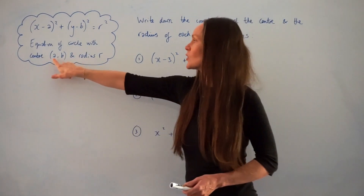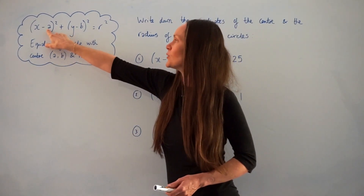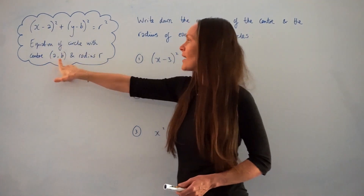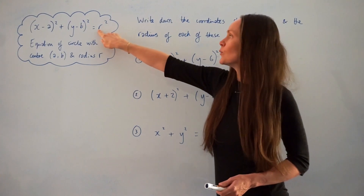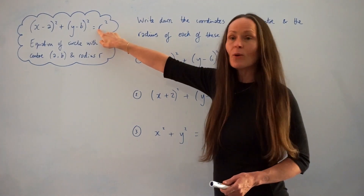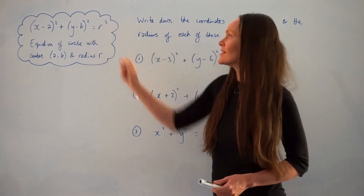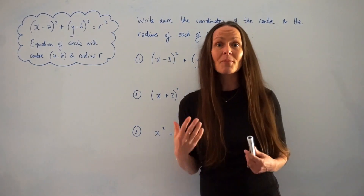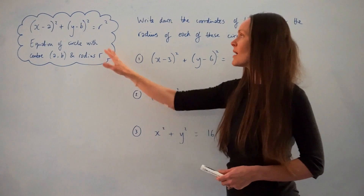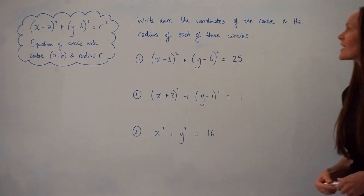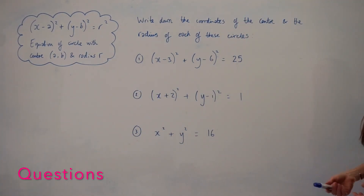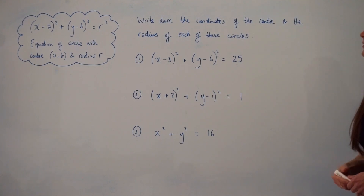So the x-coordinate is a and the y-coordinate is b. The radius would be the value of r in this equation. Just bear that in mind as we work through these questions. The task says: write down the coordinates of the centre and the radius of each of these circles.